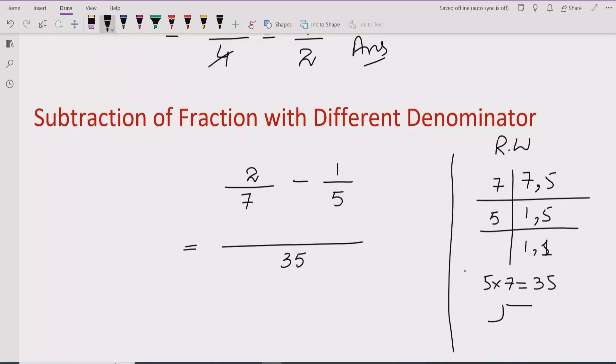And now we have to divide this one. Now we have to divide this one, 35 divided by 7. So 7 times 5 is 35. Now we will multiply this number from the numerator.